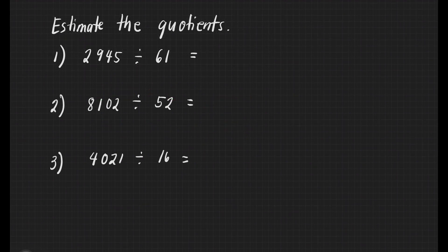Let us have some exercises — let's estimate the following quotients. The first thing we should do is round off our divisor and our dividend to their highest place value. For number 1, 2,945 will become 3,000, and then our 61 will become 60.